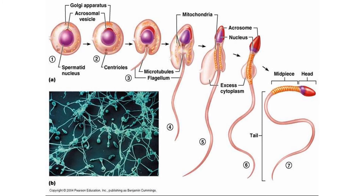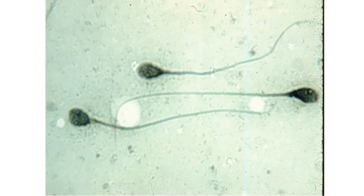Just another look at spermiogenesis — how we transform a spermatid haploid cell into a full-fledged sperm. When fertilization occurs, that flagellum is broken off from the rest of the cell and left outside the egg. Only the head travels into the egg cell. Basically, the flagellum is just jettisoned once we arrive at the destination — the ovum or egg.